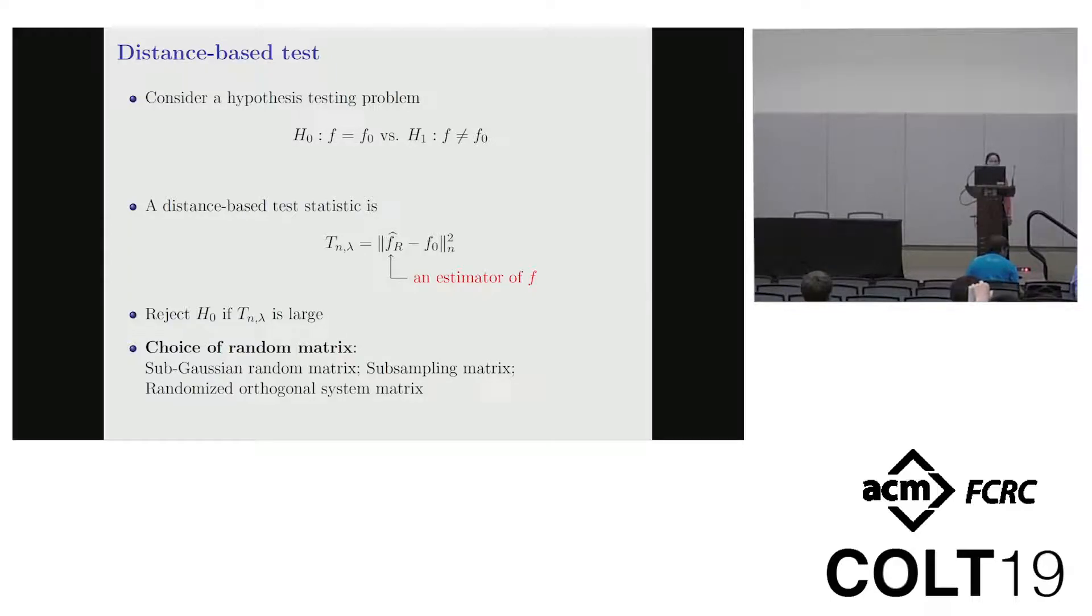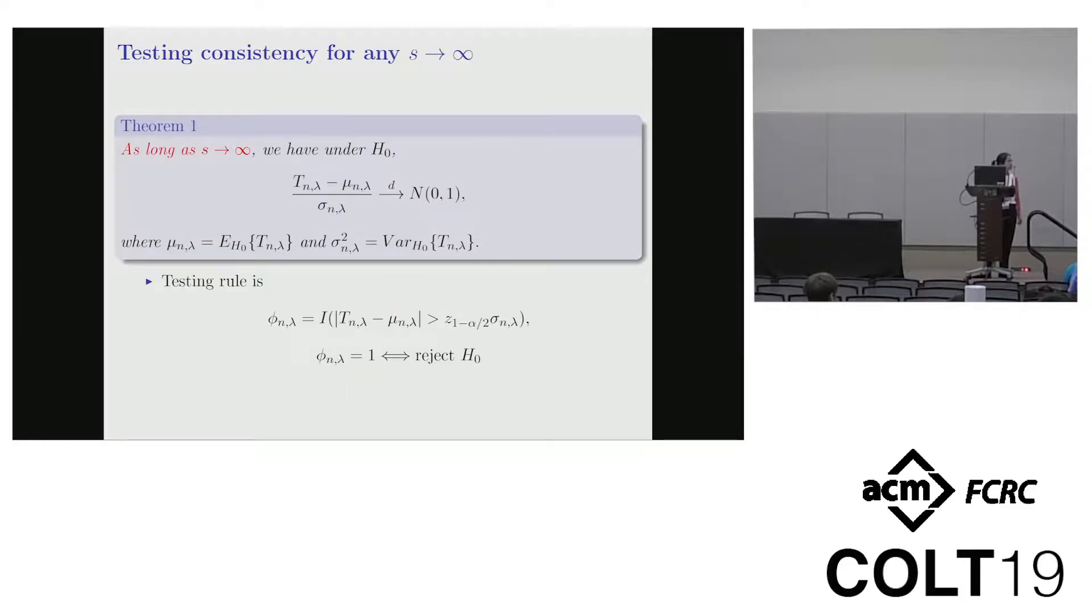Let's get back to our nonparametric testing problem. Here we consider the null hypothesis that F is equal to F0. This F0 can be a signal. For example, F0 can be zero or F0 can be some pattern, some unknown function but with known pattern. For example, F0 can be a linear function or a second order polynomial function. Here we introduce a distance-based test statistic. As defined here, it is the empirical norm between an estimator and the null hypothesis. Intuitively, if the null hypothesis is true, then our test statistic should be very small. Otherwise, the test statistic will be very large and we will reject the null hypothesis. Here the estimator we use is the randomized KRR estimator and the choice of random matrix includes sub-Gaussian random matrix for theoretical convenience, or the sub-sampling matrix, randomized orthogonal system matrix.